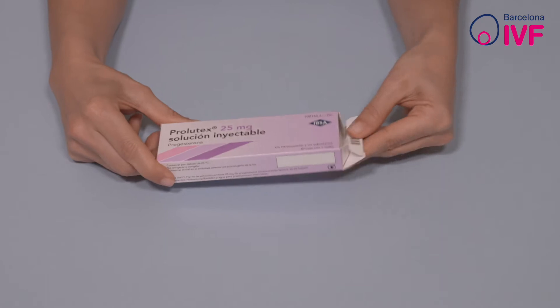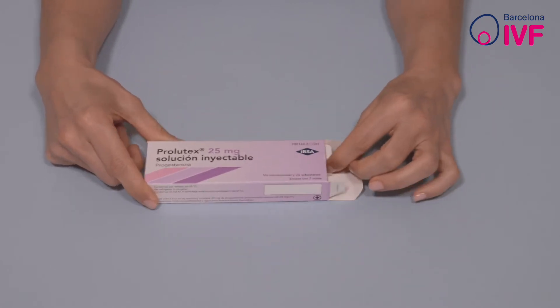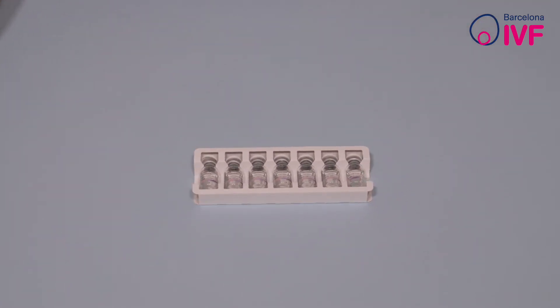Open the box of the medication and place its content on the table. You will see that the kit consists of 7 vials of medication that have already been prepared.